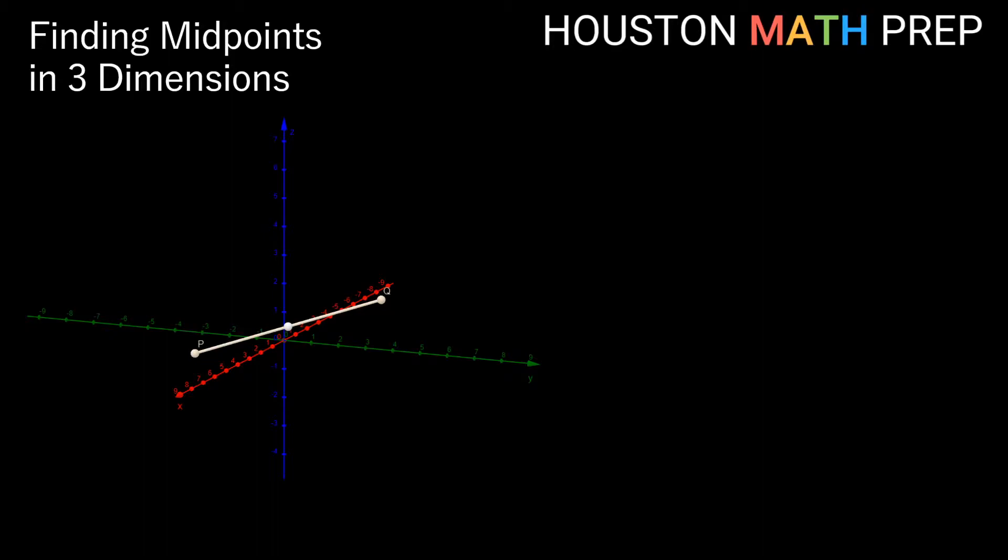So here we've got two points we've labeled P and Q, and remember that the midpoint is just the point that's located exactly halfway between them on the straight line that connects them. And really a midpoint is just halfway between them in each direction, so in the x direction, the y direction, and the z direction now in three dimensional space.